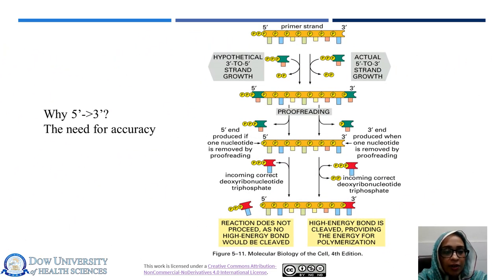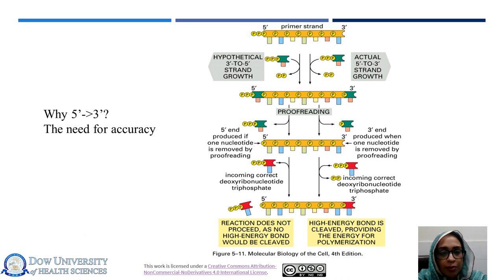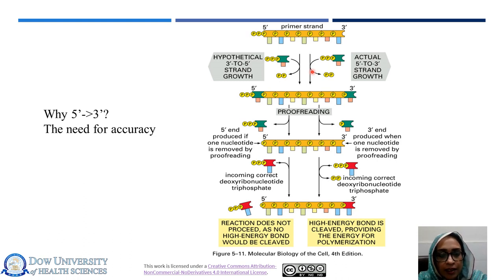DNA replication only proceeds in the 5' to 3' direction. The need for accuracy explains this unidirectional mode. If a DNA polymerase were to add deoxyribonucleoside triphosphates in the 3' to 5' direction, the growing 5' end rather than the incoming mononucleotide would have to provide the activating triphosphates needed for covalent linkage. Mistakes in polymerization could not be hydrolyzed away because the bare 5' end created would immediately terminate DNA synthesis. It is therefore only possible to correct a mismatched base added at the 3' end, preserving the 5' to 3' direction required for exonuclease proofreading activity.